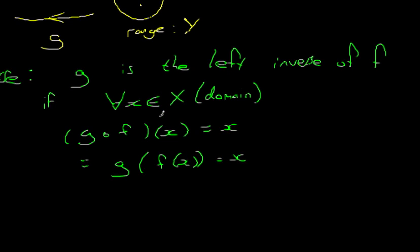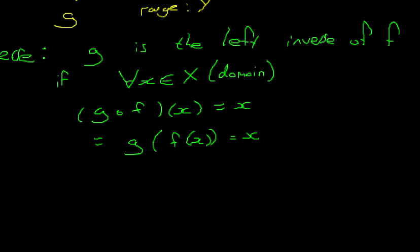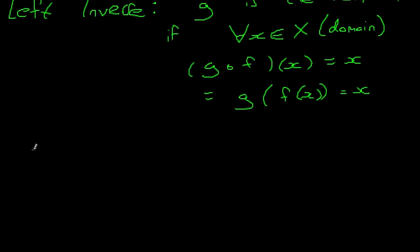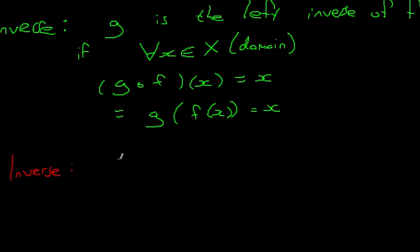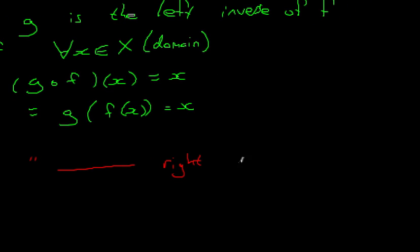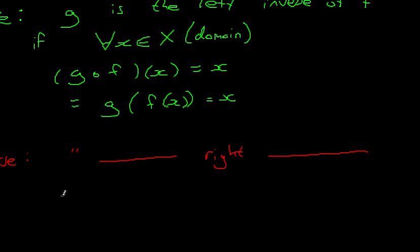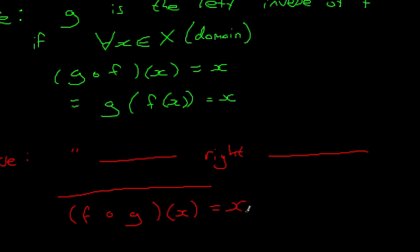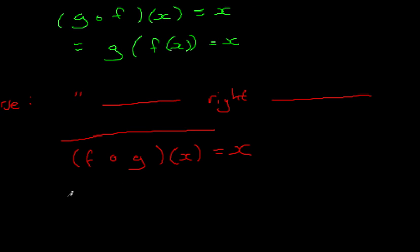And then, the difference between this and a right inverse, maybe you can see what's coming. A right inverse: g is the right inverse of f if for all x in the domain, f composed with g of x equals x, i.e., f of g of x equals x.